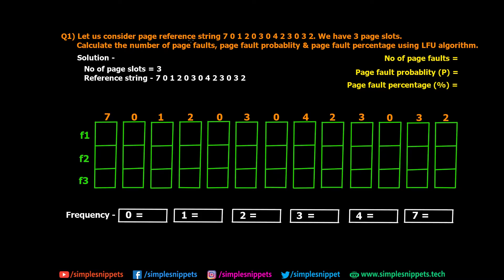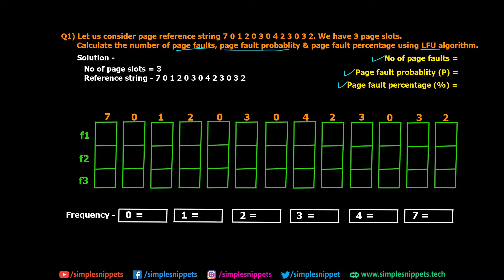Let's solve the numerical. The page reference string is: 7, 0, 1, 2, 0, 3, 0, 4, 2, 3, 0, 3, 2. We have three page slots in memory — frames F1, F2, and F3. The reference string represents page requests coming in from left to right. We need to calculate the number of page faults, page fault probability, and page fault percentage using the LFU algorithm. A frequency table is maintained for each unique page number: 0, 1, 2, 3, 4, and 7.